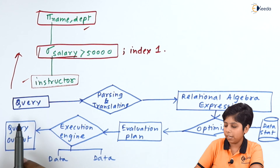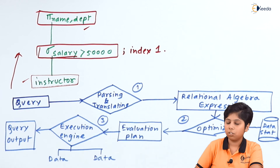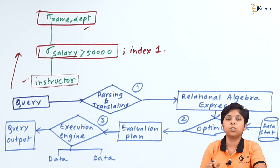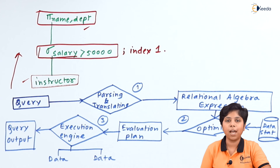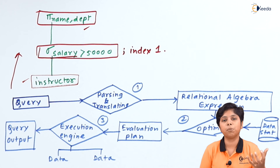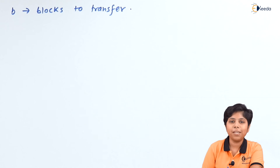Now we will talk about how we can measure query cost for optimization. At the optimization step we need to calculate the cost of the query. We calculate each block transfer and the seek time. Block transfer is the block of data that needs to transfer from the disk block to main memory to evaluate the query. Seek time is how many times the disk needs to seek data to get the exact desired output. If b is blocks to transfer and s is the number of seeks, then for tuples from relations T and S, the time is b × t_T + s × t_S seconds.